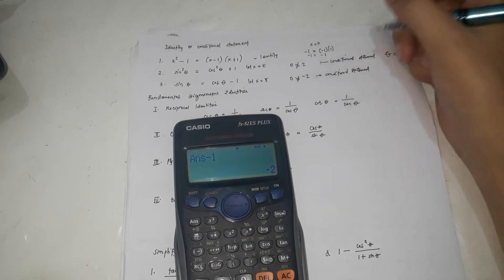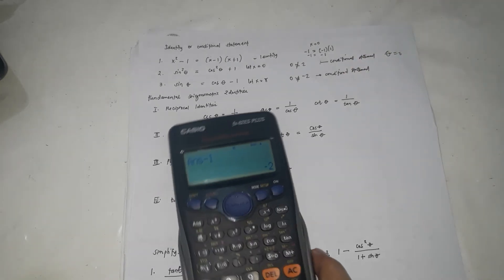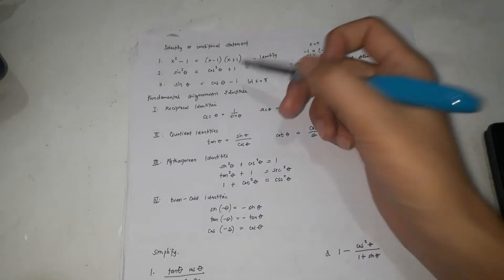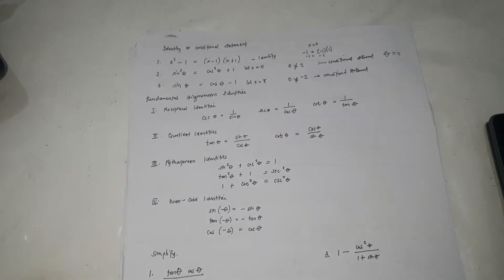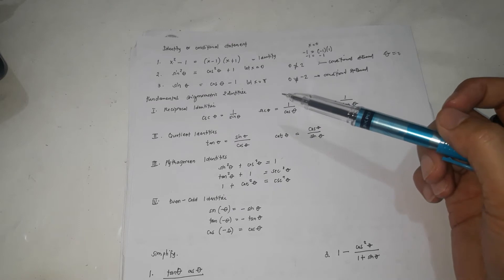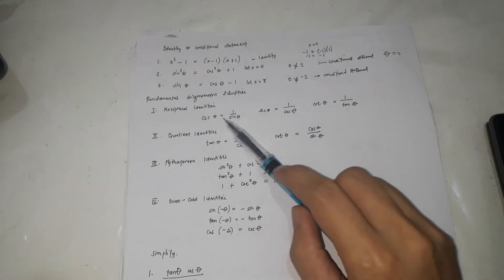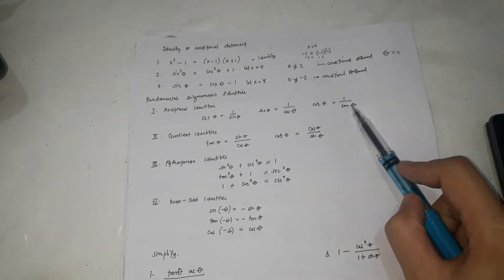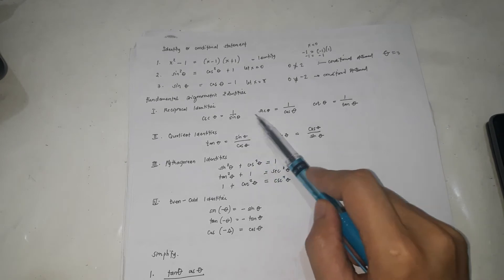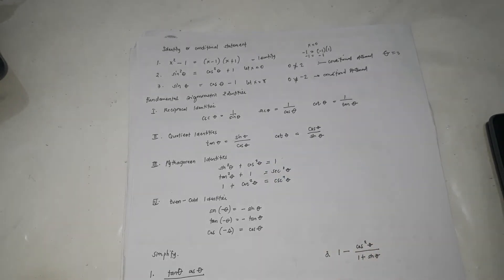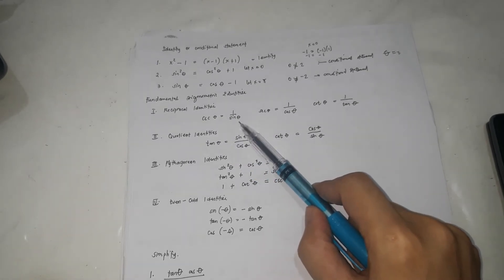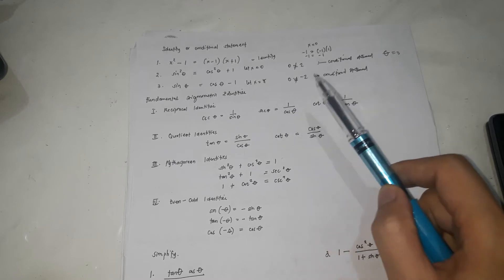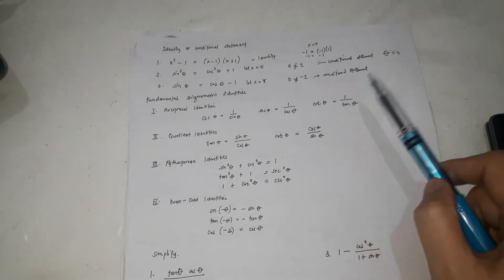We'll now proceed with the fundamental trigonometric identities — these are the identities fundamental in trigonometry, expressed as circular equations. Reciprocal identities: cosecant theta equals 1 over sine; secant theta equals 1 over cosine; cotangent theta equals 1 over tangent. A memory trick: if it starts with C, its reciprocal starts with S, and vice versa.